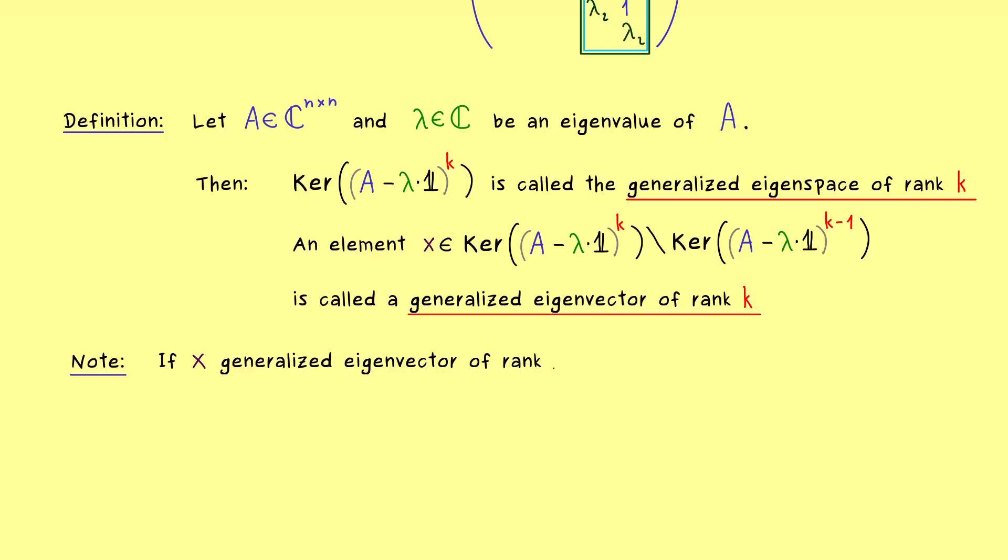Now let's assume that we have a generalized eigenvector of rank K. Then we just multiply our given matrix (A minus lambda times the identity) to the power k-1 to it. And now we see, this would be the zero vector if this power was one higher. However, exactly this implies that this new vector here lies in the kernel with power 1.